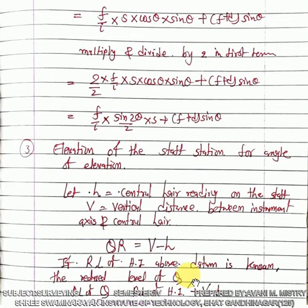For angle of depression, the formula becomes: RL of HI minus V minus h. This is the only difference. For both angle of elevation and angle of depression, the formulas to use are: D equals (f/i)·cos²theta·S plus (f+d)·cos theta, and V equals (f/i)·sin 2theta/2·S plus (f+d)·sin theta.